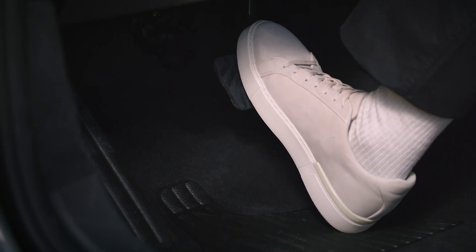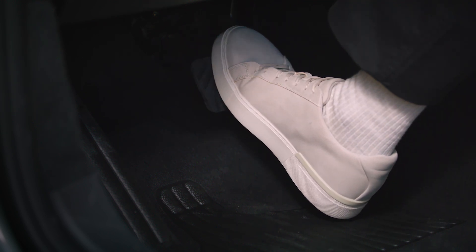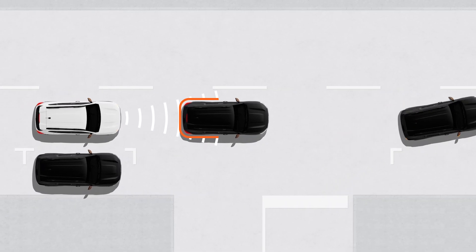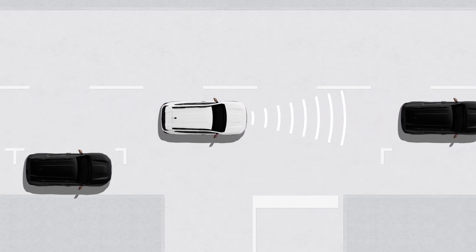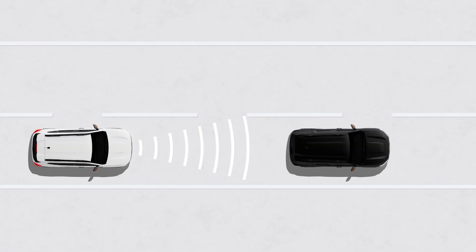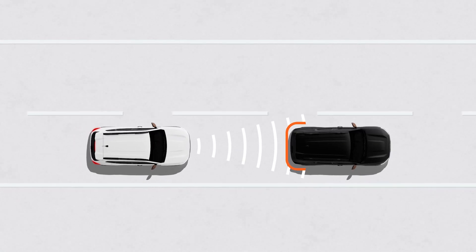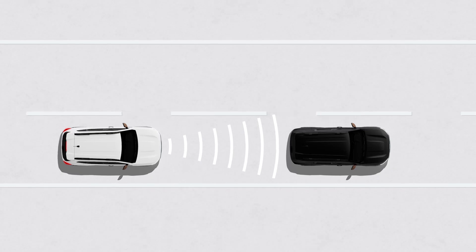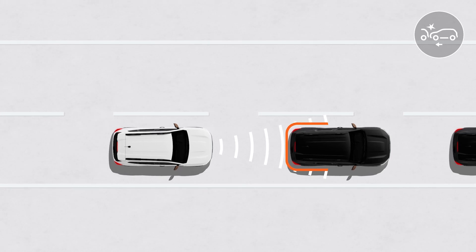You must then take evasive action or apply the brakes. If you brake and the system detects there is still a risk of collision, it will increase the braking force. If you fail to brake or take evasive action despite the audible and visual warnings, this indicator light and the message 'brake' appears on the instrument panel. Emergency braking is triggered and the vehicle brakes to a complete halt if need be.